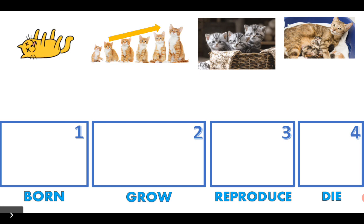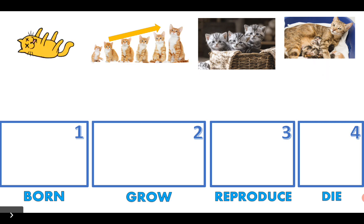Now we've got born, grow, reproduce, and die. And we have one, two, three, and four pictures of cats. Let's see what picture number one represents: born, grow, reproduce, or die? Very good! It represents die. And what number is for die — one, two, three, or four? Four! Very good!